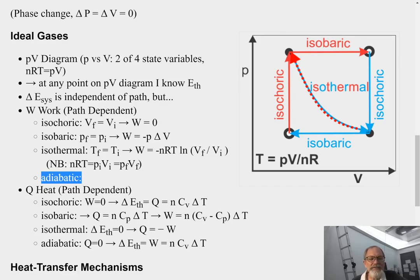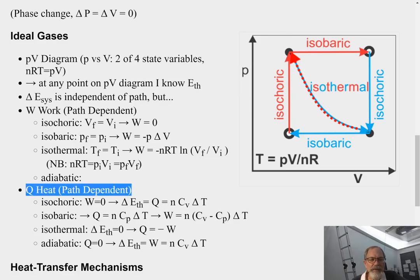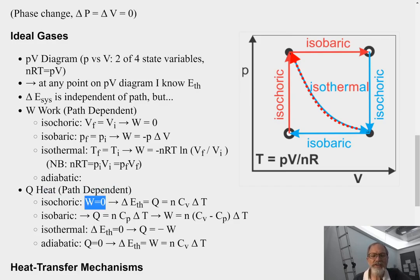All right. Next, heat. As I said, the change in system energy is independent of path, but these guys aren't. So, isochoric. Work equals zero. So, the change in thermal energy is going to be Q, and we discussed earlier that's going to be N times a constant at constant volume, delta T. So, we have a constant to relate between the change in temperature and the change in thermal energy.